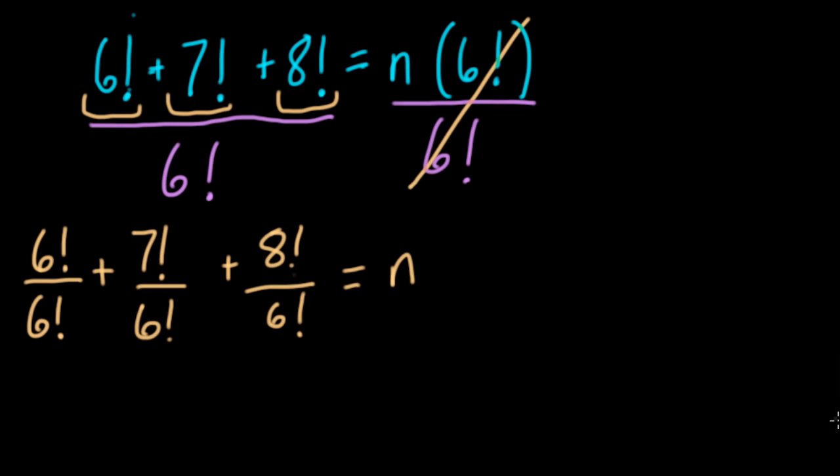So how do we deal with this? Well, we're going to solve each of these in step. So first we have 6 factorial divided by itself. Well, that's just 1, right?